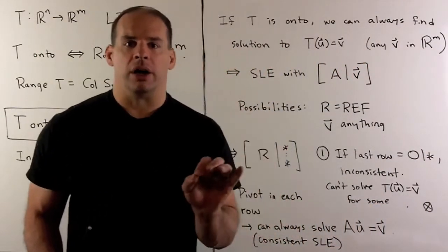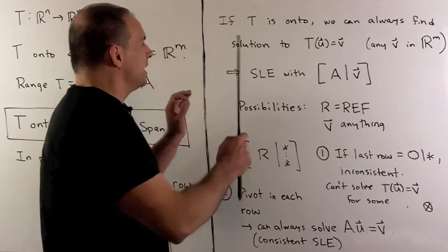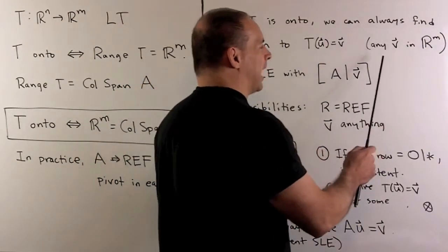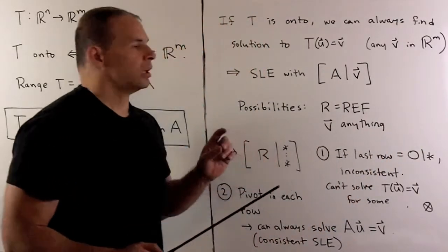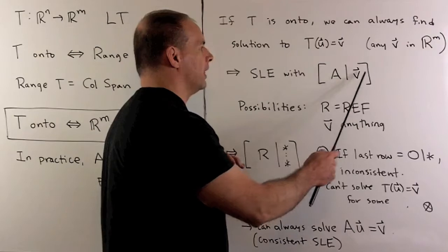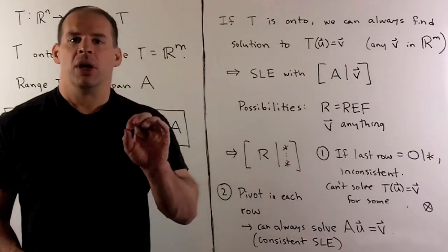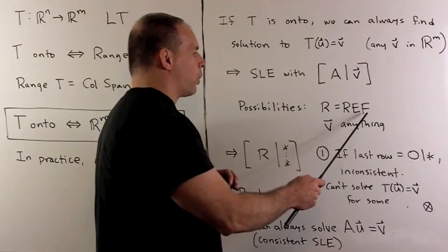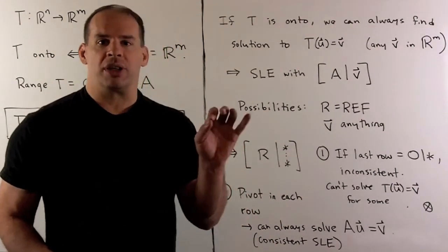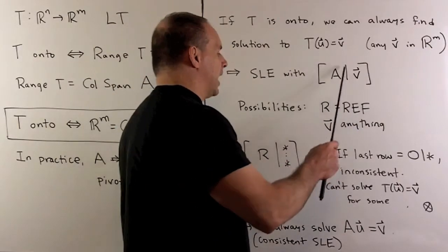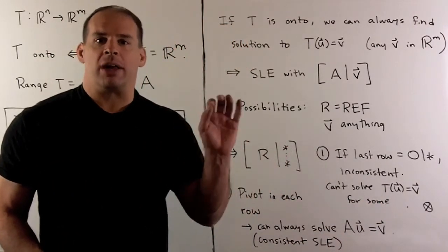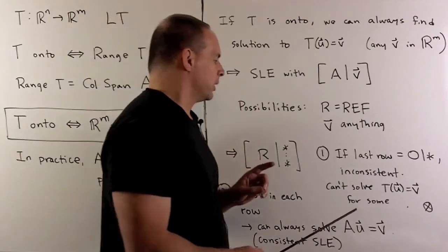Now, to get a feel for what's going on here, if t is onto, we're trying to find a solution to the equation t on u equal to v, where we can let v be any vector in Rm. So, if I choose a v, then we're trying to solve the system of linear equations with augmented matrix A in the first part, V in the second part. So there are going to be two possibilities when I put A into row echelon form. So, if we get the last row equal to all zeros in the row echelon form, since I can let v be equal to anything, that means we can have zero equal to a non-zero number. So it's going to be inconsistent, which means we're not going to be able to solve that system of linear equations. So that's going to mean we can't be onto.